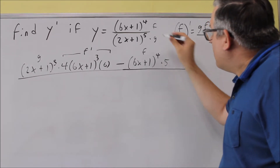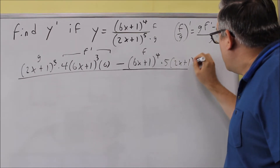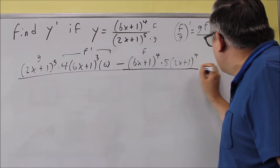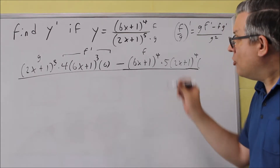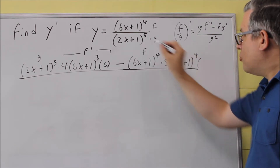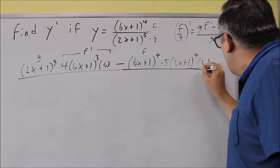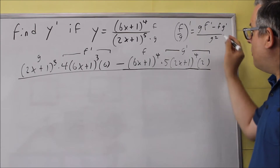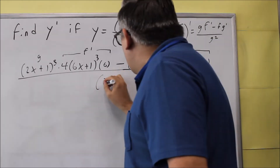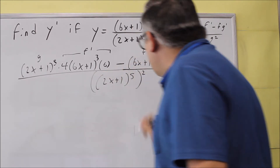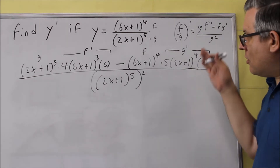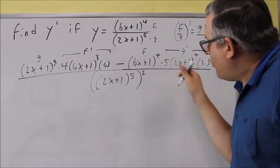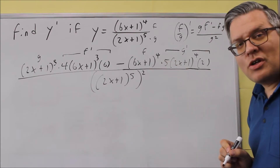The derivative of the bottom also requires a chain rule. The 5 comes down, giving us (2x plus 1) to the fourth power, and don't forget to multiply by the derivative of the inside, which is 2. That whole expression is G prime. The bottom of the quotient rule formula is G squared, so we take (2x plus 1) to the fifth power and square it. The calculus is done at this point — now we just simplify.